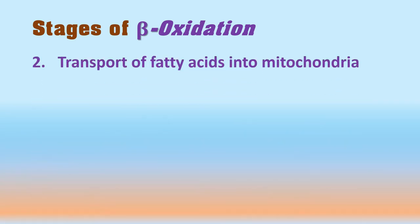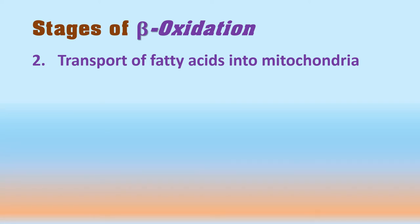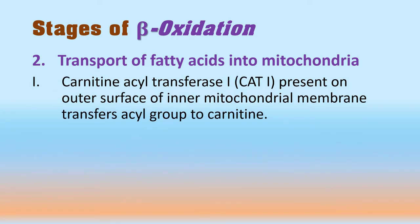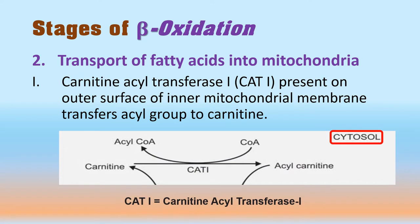The next step in beta oxidation is the transport of fatty acid into mitochondria. Since beta oxidation occurs in the mitochondria, fatty acyl-CoA must be transported from the cytosol into the mitochondria for oxidation. This requires carnitine — a transporter consisting of beta-hydroxy gamma-trimethyl amino butyrate. The reaction requires the enzyme carnitine acyl transferase 1 (CAT1), which is present on the outer surface of the inner mitochondrial membrane and transfers the acyl group to carnitine, converting it into acyl-carnitine in the cytosol.